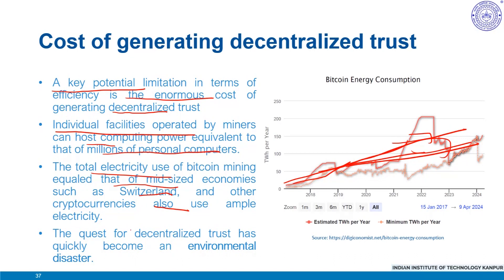The quest for decentralized trust has quickly become an environmental disaster — with huge energy consumptions completely in contradiction with requirements of sustainable environments and lower renewable energy consumption. To summarize: creation of trust is the most important aspect of decentralized permissionless blockchain-based cryptocurrencies. However, there are two important questions: at what cost this trust is achieved — requiring a lot of energy — and whether that trust can truly be achieved at all times.